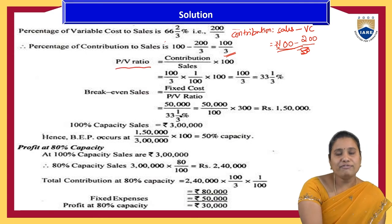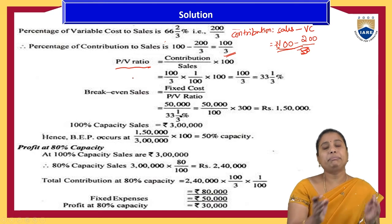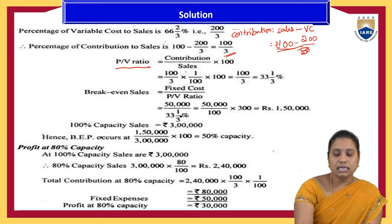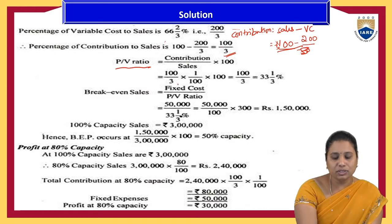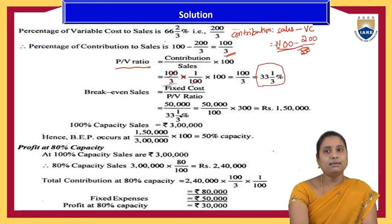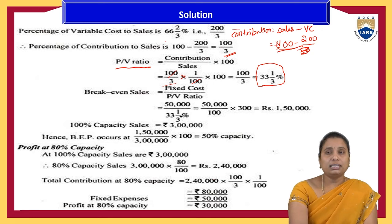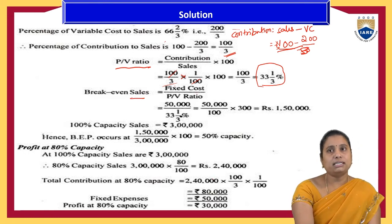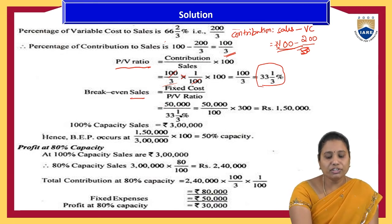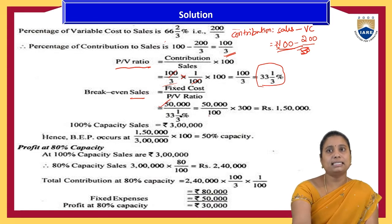The profit volume (P/V) ratio = contribution/sales × 100 = (100/3) ÷ 100 × 100 = 33⅓%. BEP in terms of sales = fixed cost ÷ P/V ratio = ₹50,000 ÷ (100/3)% = ₹50,000 × 300/100 = ₹1,50,000.